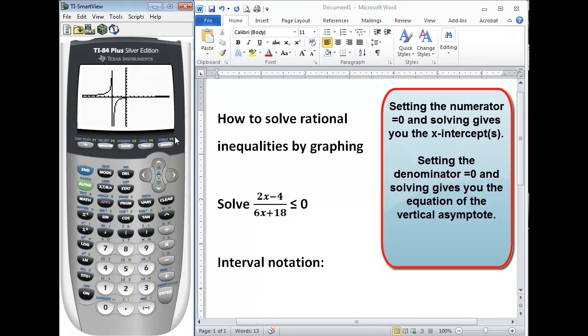If we can't see that from the graph we can go to our table as well. And in your table you'll see that when x is 2 your y value is 0. This value comes from the numerator. The numerator represents our x intercept once we solve it for 0 and set it equal to 0. Our denominator gives us our asymptote.